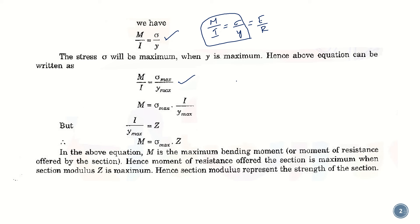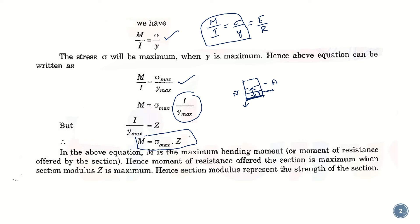For example, if this is your neutral axis and this is the outermost layer, the distance from the neutral axis to that layer is y_max. For an intermediate layer it would simply be y. Since the maximum bending stress is induced at the outermost fiber, when y becomes y_max, sigma becomes σ_max. From this we can write M = σ_max × (I / y_max), and since I/y_max is section modulus Z, we get M = σ_max × Z.